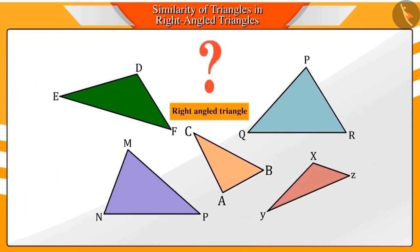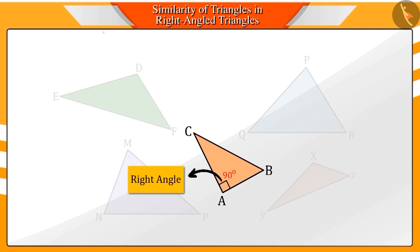Can you tell me, out of these triangles, which triangle is a right-angled triangle? Absolutely correct. Triangle ABC is a right-angled triangle.